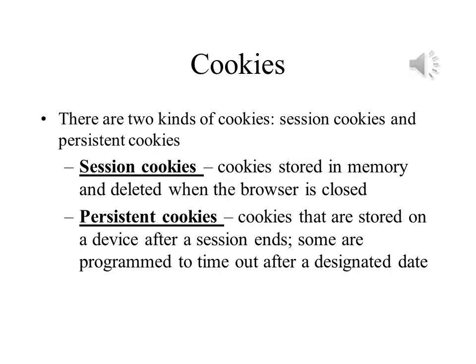Cookies can be session cookies or persistent cookies. Session cookies are stored in memory, and when the browser is closed, they are deleted from memory. Persistent cookies are stored on a device after the session is over. Some will time out after a specific date and time. Others may need to be deleted.